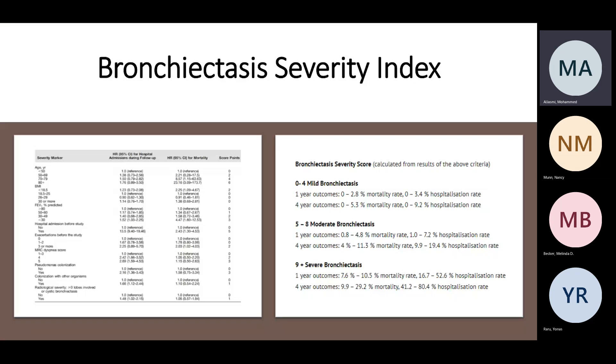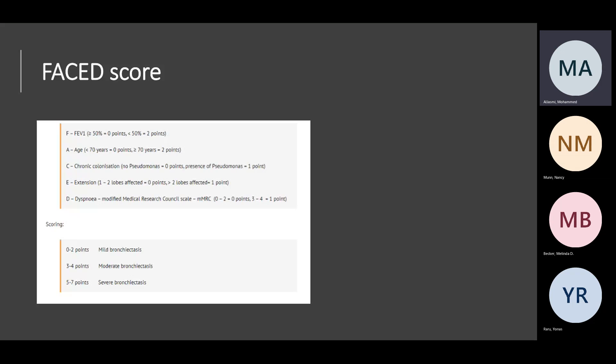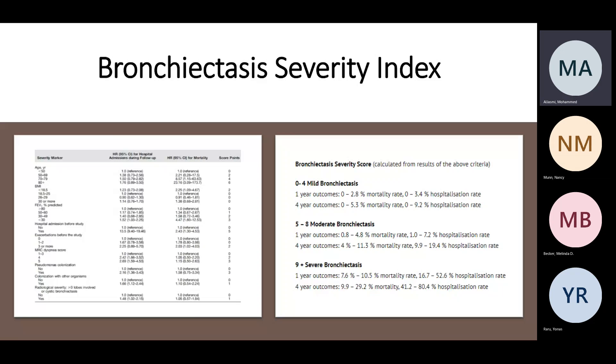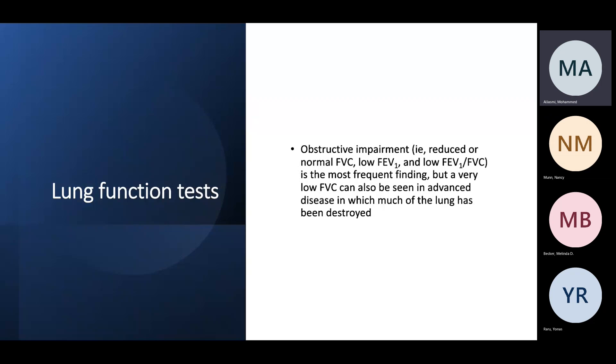The FACED score is part of the BSI framework but focuses on five elements: FEV1, Age, Chronic colonization, Extension, and Dyspnea. It gives mild, moderate, and severe classifications but without specific mortality or hospitalization rate data. In lung function testing, as noted, the pattern is mainly obstructive impairment.